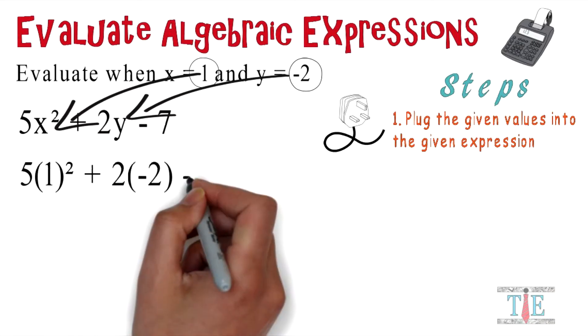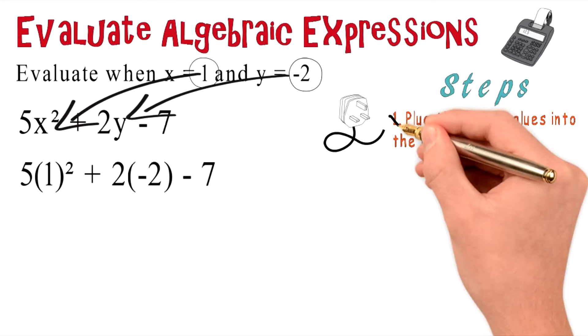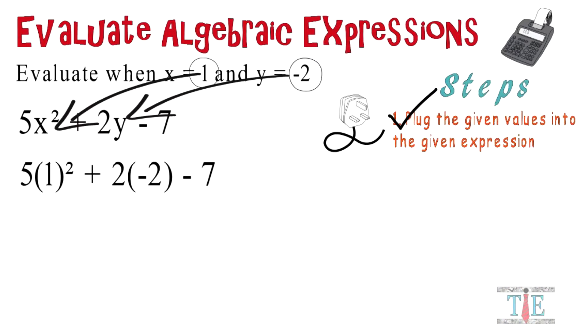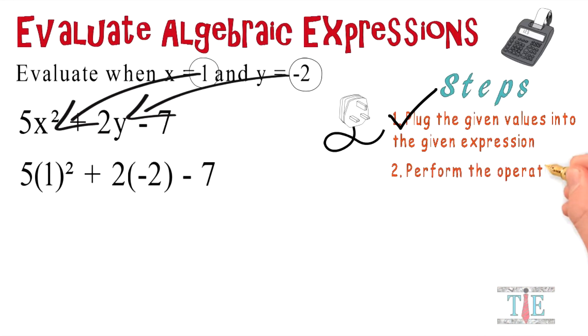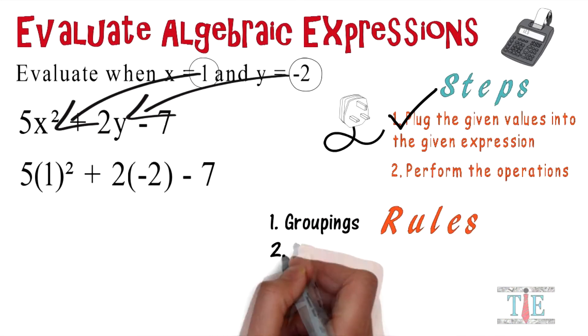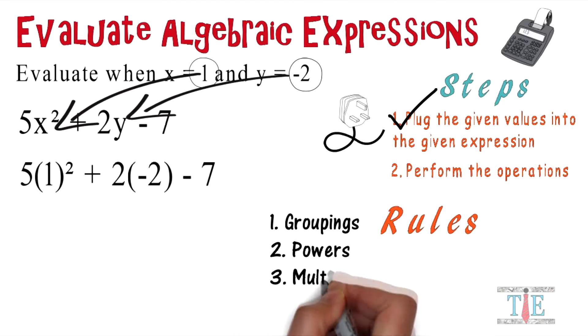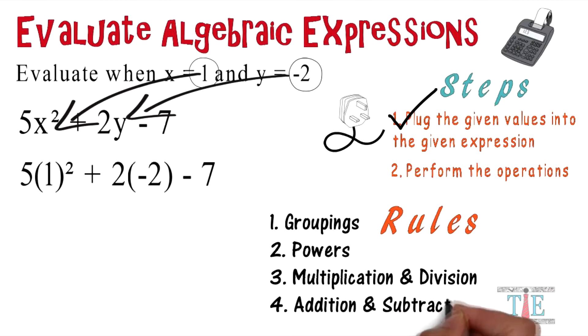Now you've got 5 times 1 squared plus 2 times negative 2 minus 7. We've plugged in the values, so let's check off the first step. Move on to step number 2, which is perform the operations. Don't forget the rules associated with operations: groupings come first, followed by powers, multiplication and division, followed by addition and subtraction.